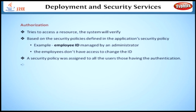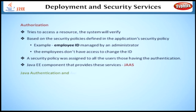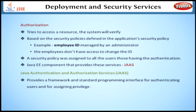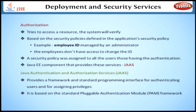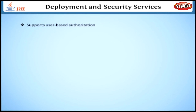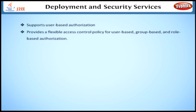Let's look at the Java EE component that provides these services, i.e., JAAS — Java Authentication and Authorization Services. JAAS provides a framework and standard programming interface for authenticating users and for assigning privileges. It is based on the standard Pluggable Authentication Module, or PAM, framework and also supports user-based authorization. JAAS provides a flexible access control policy for user-based, group-based, and role-based authorization. We will discuss more about this later in the course.